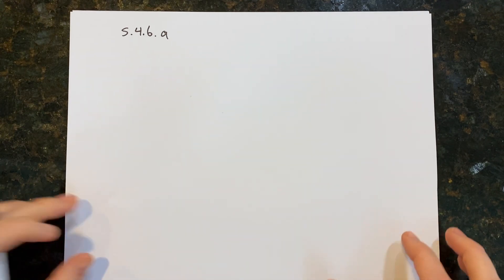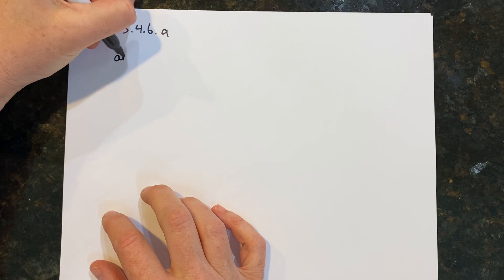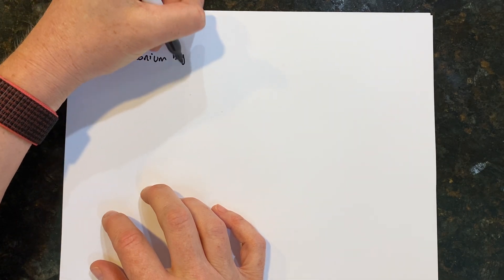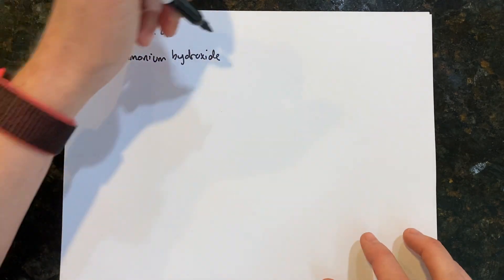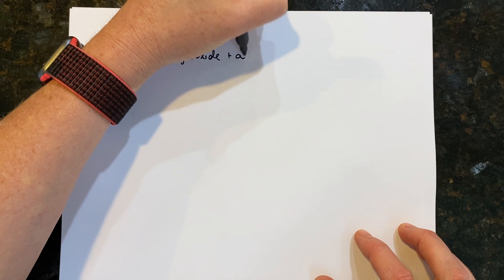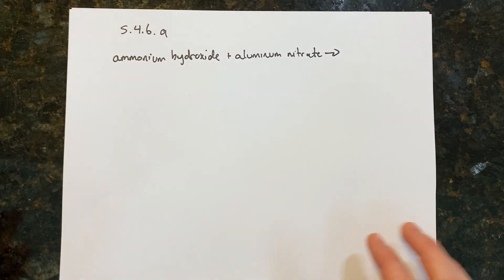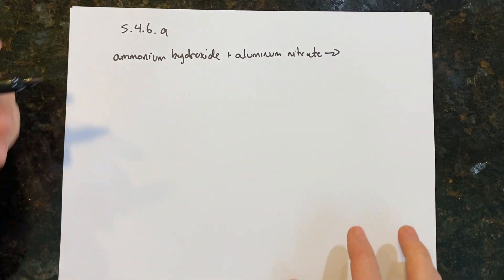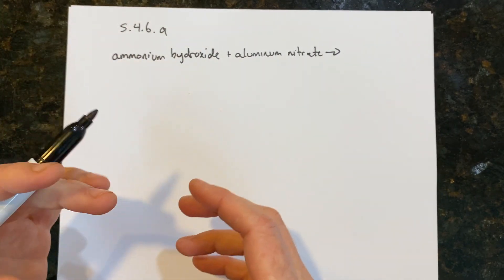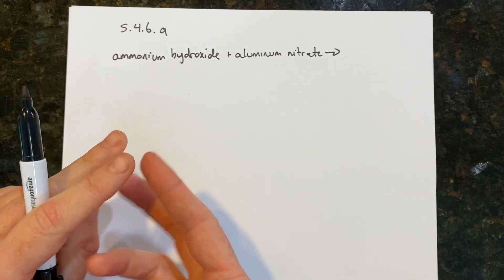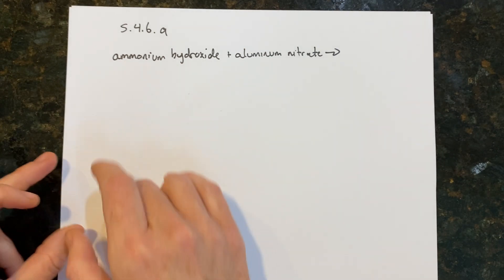Quick Check 5.4.6: identify if a reaction takes place with the following compounds; if no reaction takes place, write 'no reaction.' We're going to write this whole thing out — it's going to take a little bit of time but it's worth knowing how to do. It says ammonium hydroxide is reactive with aluminum nitrate, and we're trying to figure out if it forms anything.